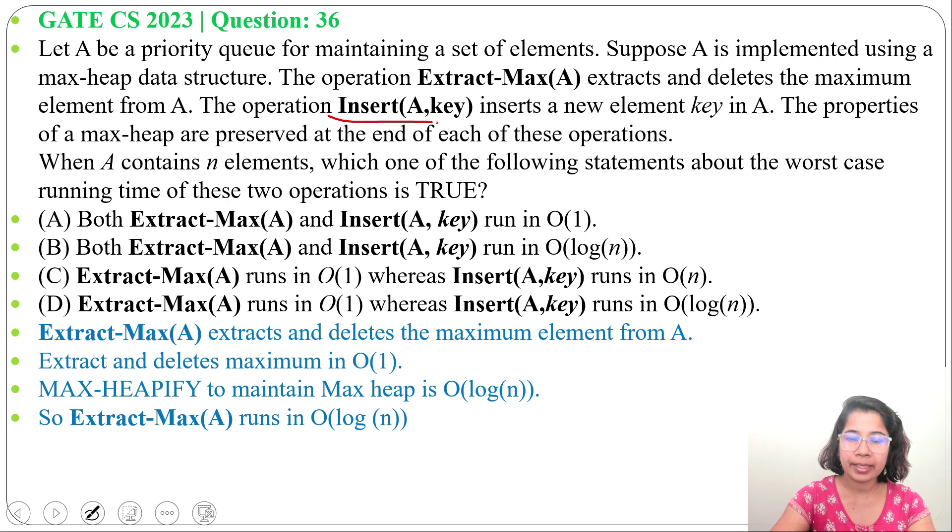The next operation is Insert(A, key). This is a max heap. Now we want to insert 10 here, so we insert 10 as the last element, as 4's left child. Next, we do heapify. We need to maintain the heap. We compare 10 with 4. 10 is greater than 4, so we swap these two. Next, we compare 10 with 7. 10 is greater, so we swap again.